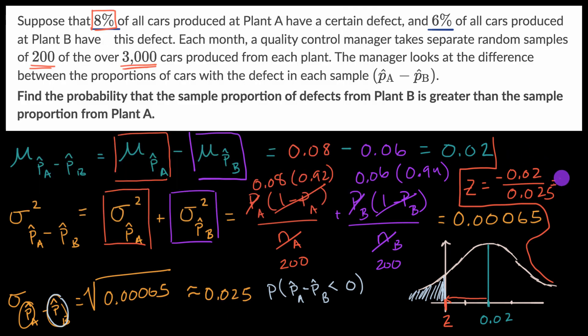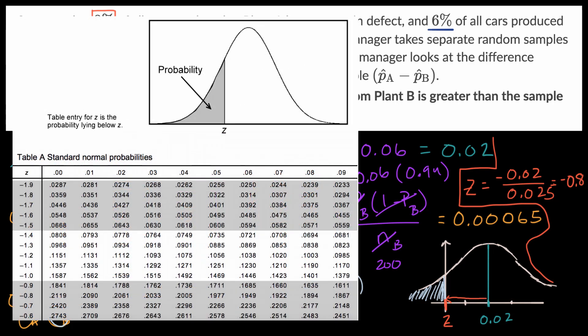So it is negative 0.8, and then we just have to use a Z lookup table. And so if we look at a Z lookup table, what we see here is if we're going to negative 0.8, negative 0.8 is right over here. So negative 0.8, and then we have zeros after that. So we're looking at this right over here. The area under the normal curve up to and including that Z value. That gives us 0.21, or we could say this is approximately 21%.